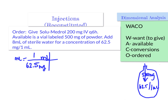Any conversions needed? No — the available is in milligrams and so is the order. No conversions required. The order says give 200 milligrams, so we put that in. Milligrams cross out, and we're left with mL, which is what we want to give. The math is 200 divided by 62.5, which equals 3.2 mL — that's how much we're going to give.